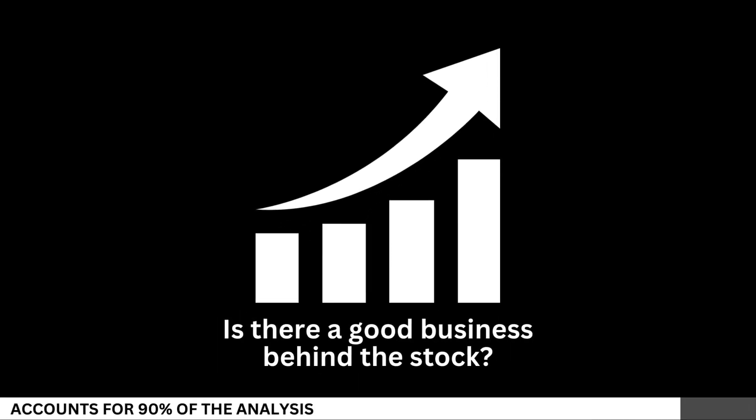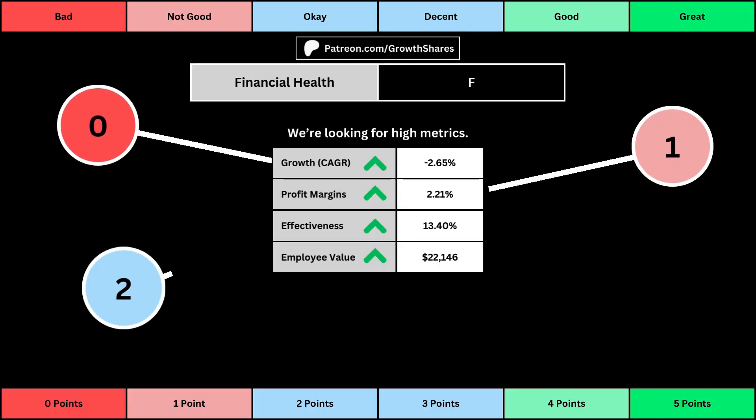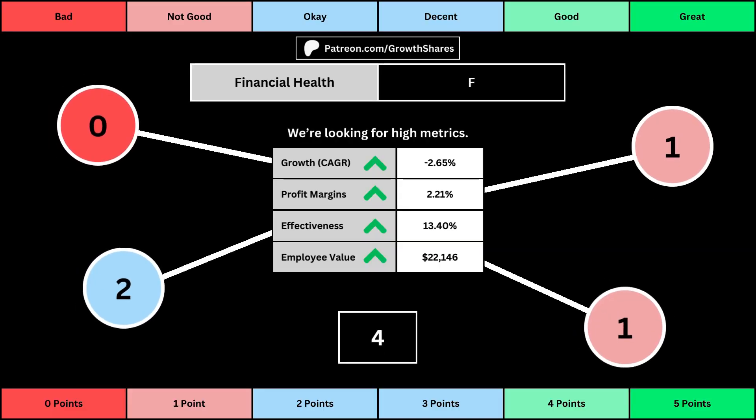We'll look at 14 metrics to determine the business fundamentals. The first set of metrics deals with the company's financial health: its projected earnings growth for the next five years, its profit margins, its effectiveness — which looks at the company's returns on equity, assets, and invested capital — and the employee value, which looks at how much value the average employee adds to the business.